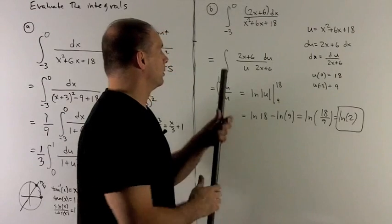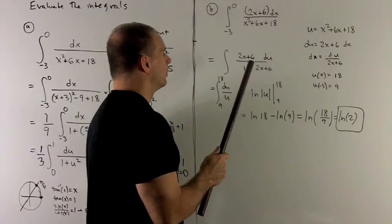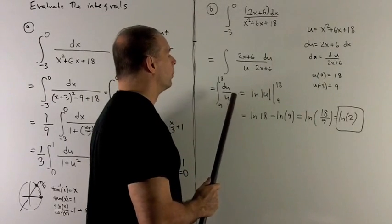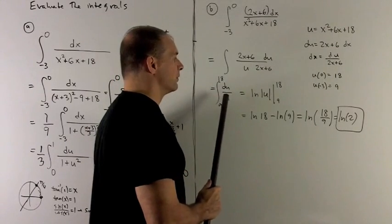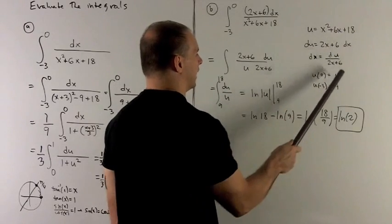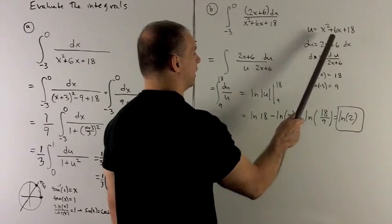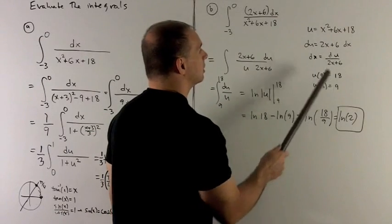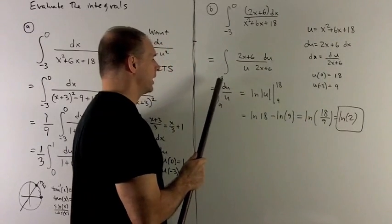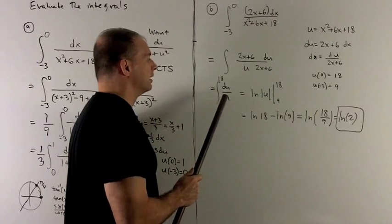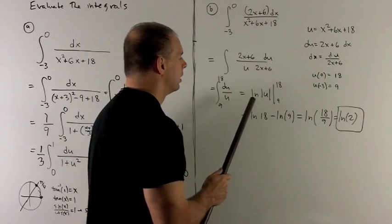So I put that into the integral. We notice the 2x plus 6s are going to go away and leave me with du over u. Since this is entirely in terms of u, I'm going to put in the u limits. So I put in 0 for here and I get 18. I put minus 3 in here and I get 9. So we're looking at the derivative of 1 over u, and then we're going to evaluate that at 18 and 9, take the difference.